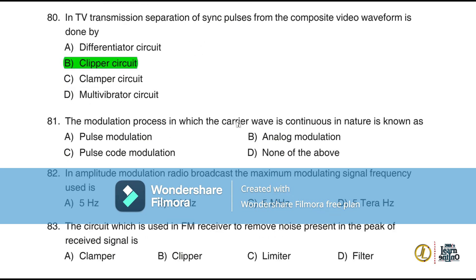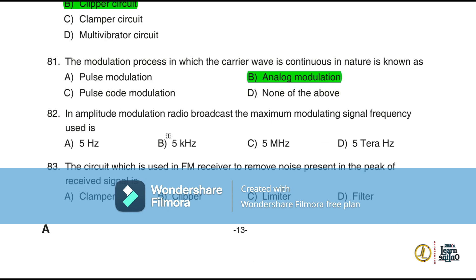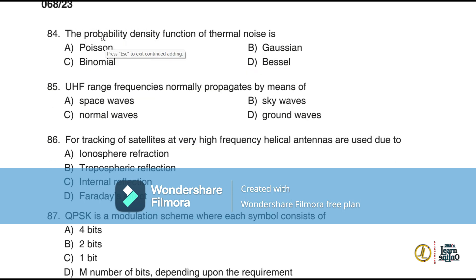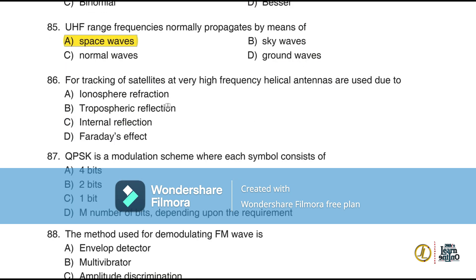Question 81: The modulation process in which the carrier wave is continuous in nature is known as analog modulation. Question 82: In amplitude modulation radio broadcast, the maximum modulating signal frequency used is 5 kHz. Question 83: The circuit used in an FM receiver to remove noise present in the peak of the received signal is a limiter. Question 84: The probability density function of thermal noise is Gaussian. Question 85: UHF range frequencies normally propagate by means of space waves.